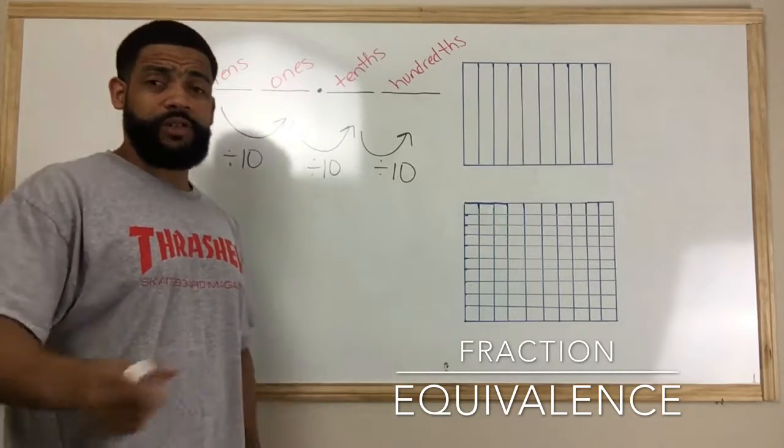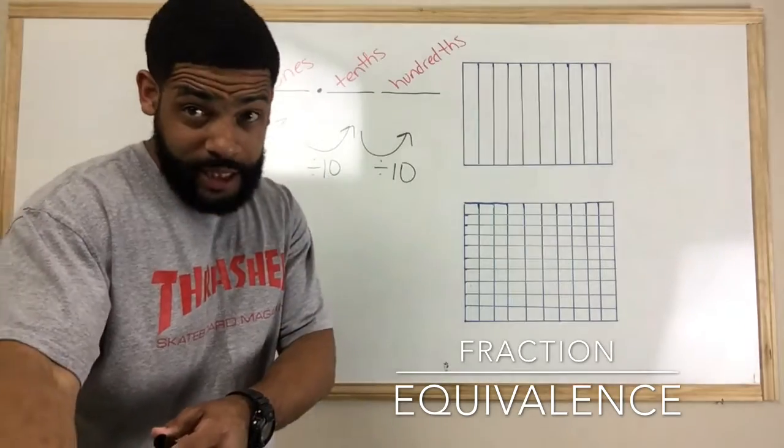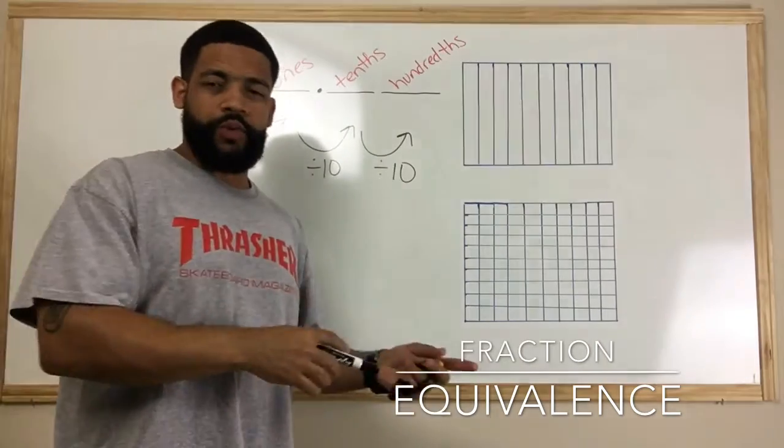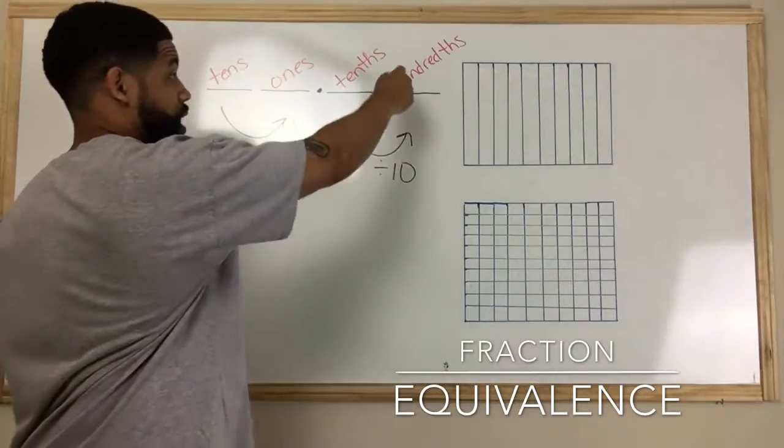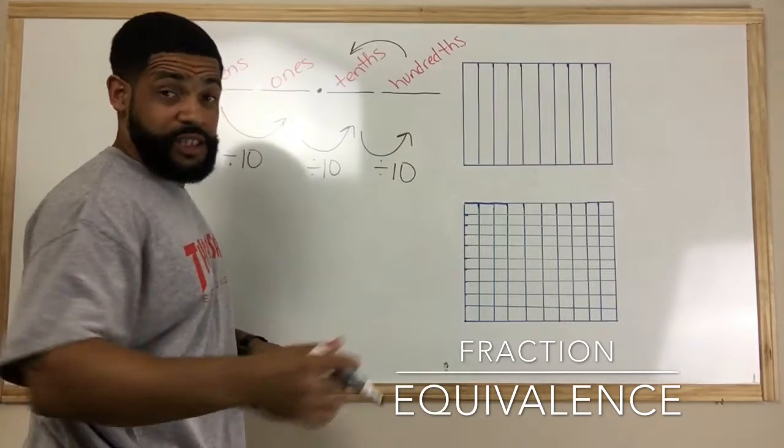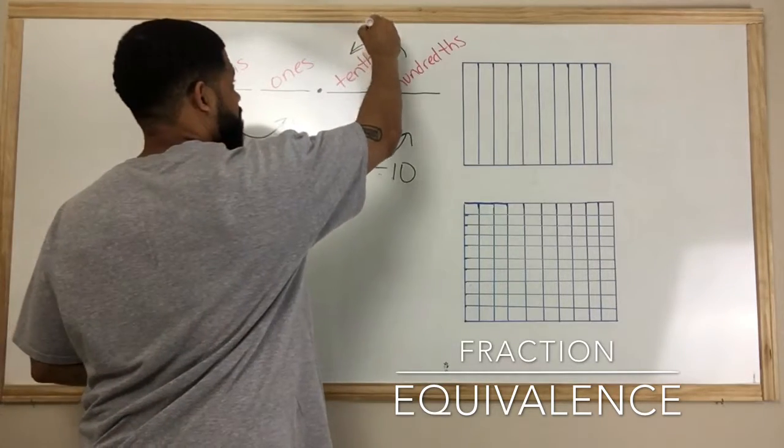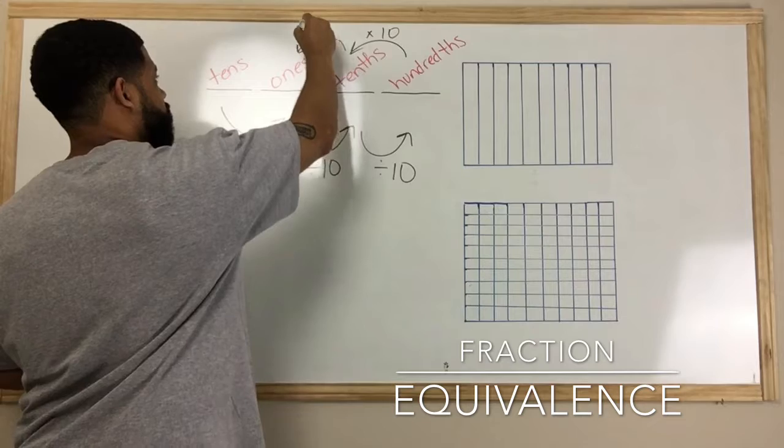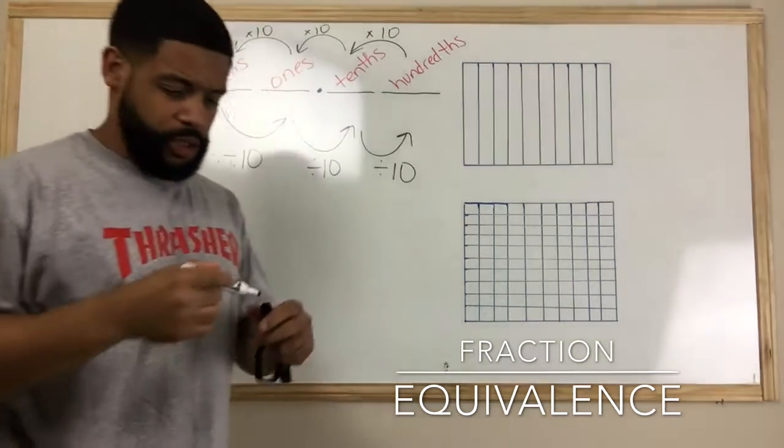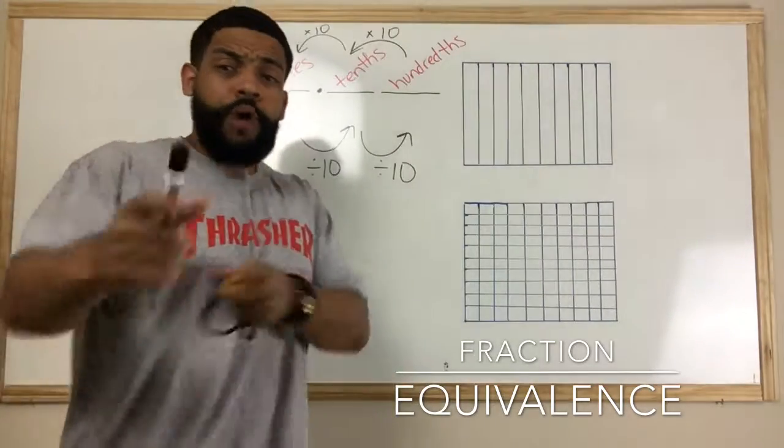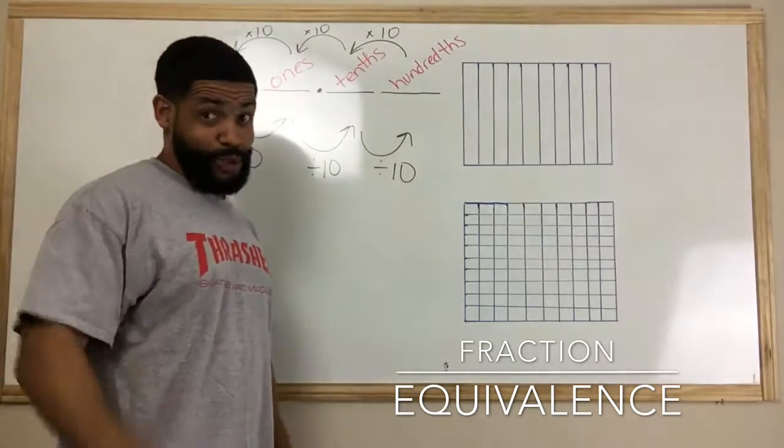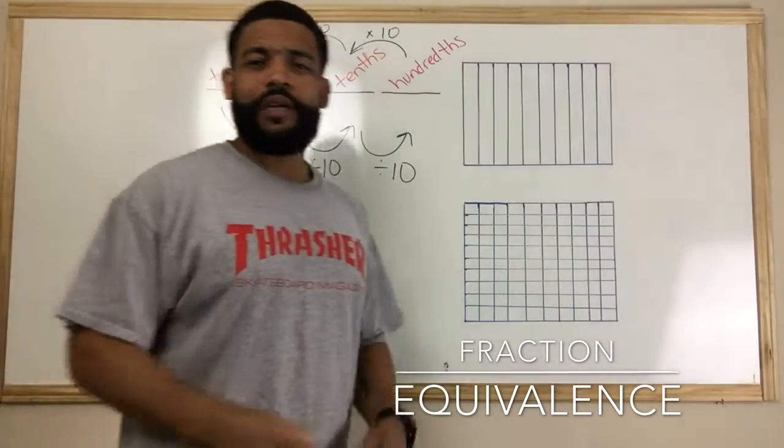Now the converse of that is true. So if I move to the left one place, so if I go from hundredths to tenths, I'm multiplying by 10. Same thing here, multiplying by 10, and right there I'm multiplying by 10. So as we go to the left one unit, we're multiplying by 10. So keep that in mind, that's something very, very important to remember, young folk and old folk too.